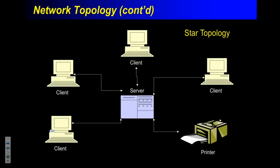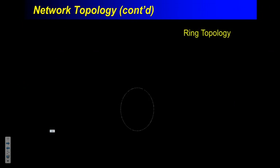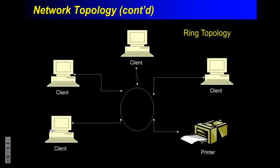But let's talk about a disadvantage of the ring topology. Let's say one client breaks down - if I want to print and send a message through that client, the connection is severed. If we back up to the star topology, if one client goes down, no problem - I can still go through the server and get to the printer. But what if the server breaks down? Everybody goes out. When the server goes down in a star topology, everybody goes out. Whereas in a ring topology, one person can go down and the others can still work.